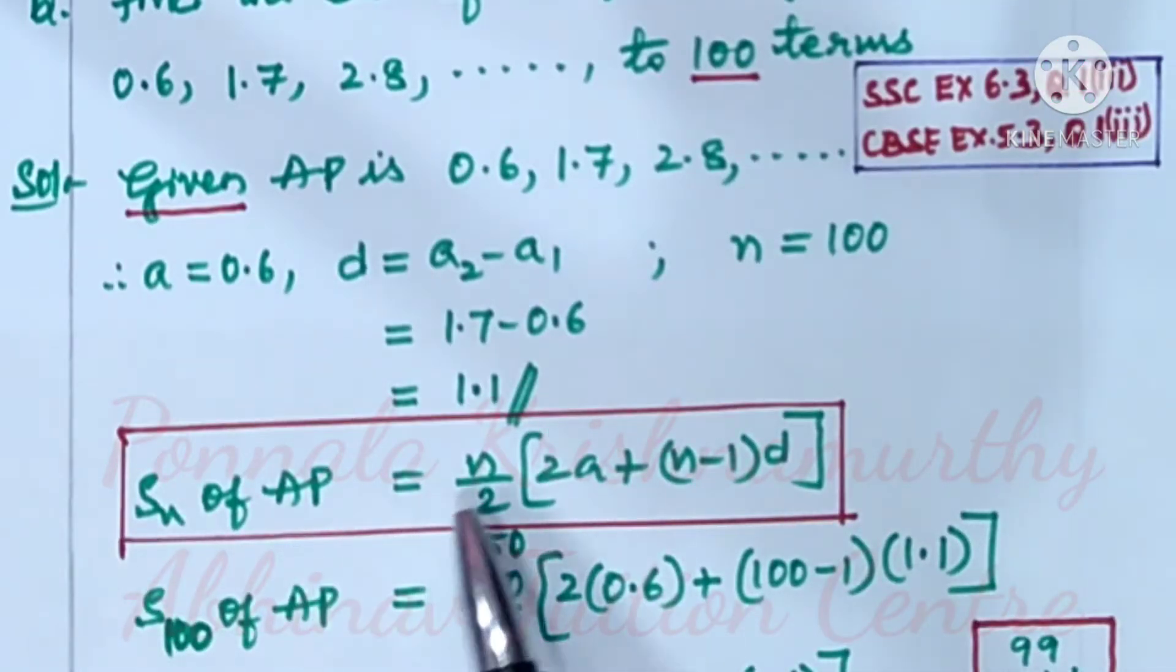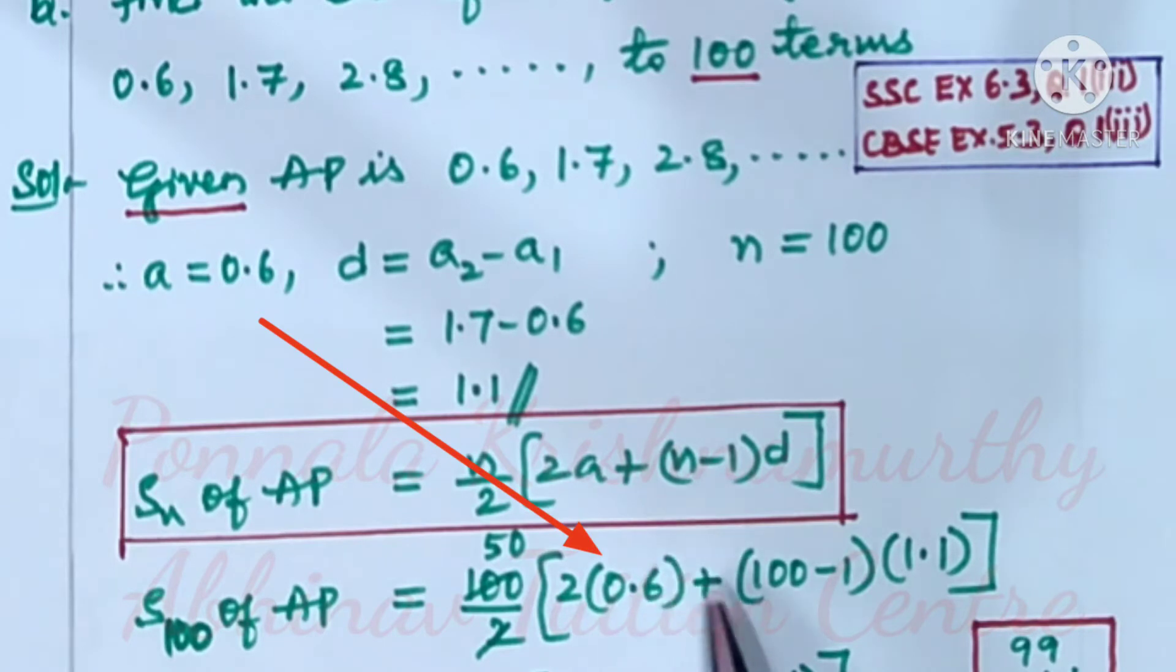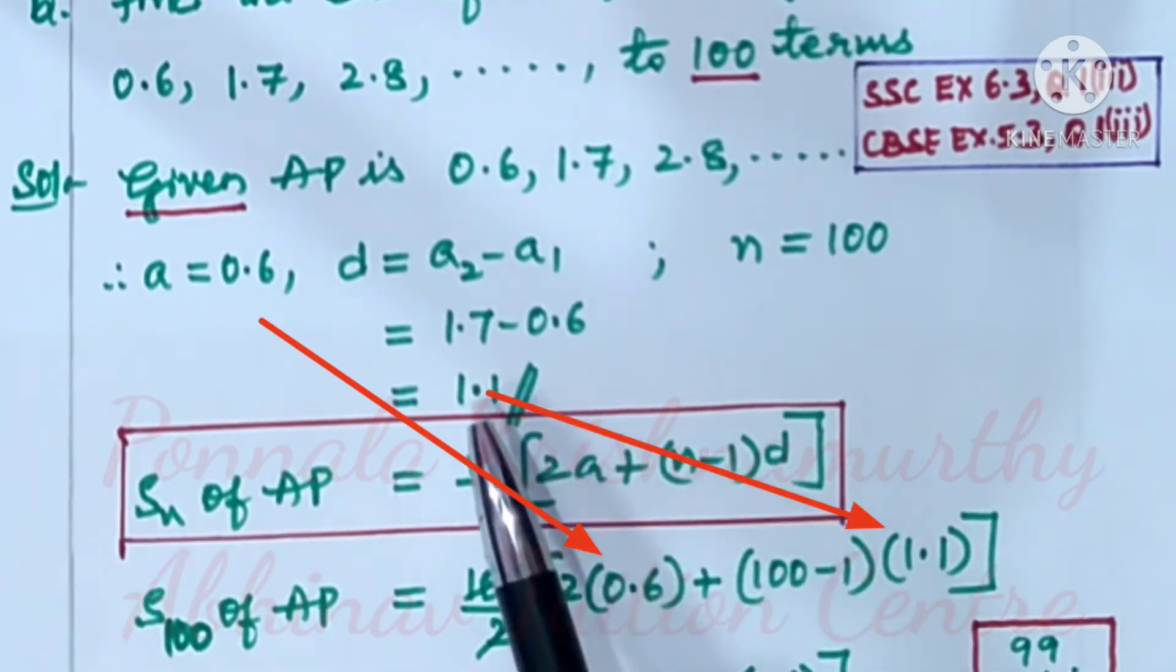Sₙ of AP is equal to n by 2 into 2a plus n minus 1 into d is the formula. Then S₁₀₀ of AP is equal to 100 by 2 into 2 into 0.6 plus 100 minus 1 into 1.1.